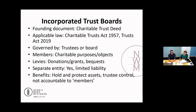Trustees have to exercise their powers for a proper purpose, so they must always consider what the objects or purposes of the trust are when making decisions and taking any action. They've got to act for the benefit of the beneficiaries. In the case of your catchment groups, anything they do must be towards furthering the objects of the trust.